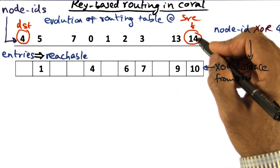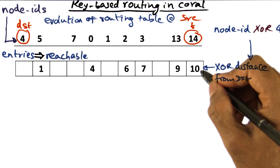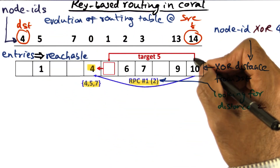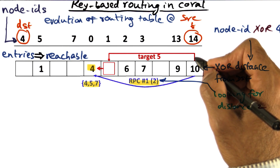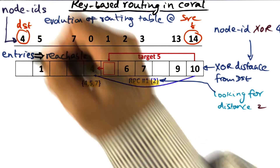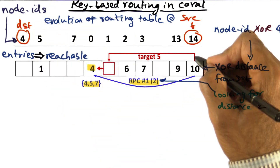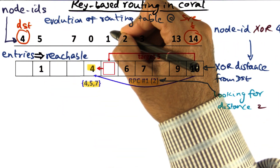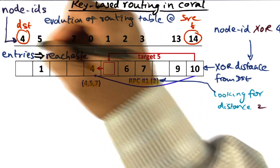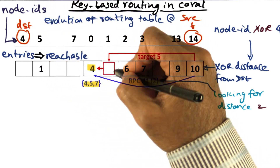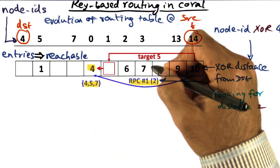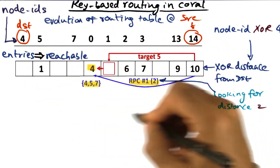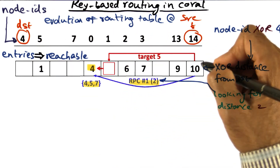The XOR distance between the source and the destination is 10. So the target for my first hop is going to be a node that is five distant from the desired destination. The node that is five distant from the desired destination is node number one, because the XOR of one and four is five. So this is my target that is half the distance to my desired destination.